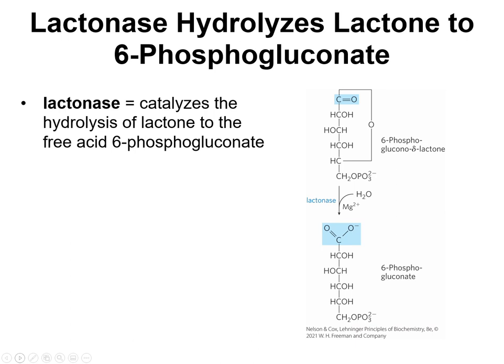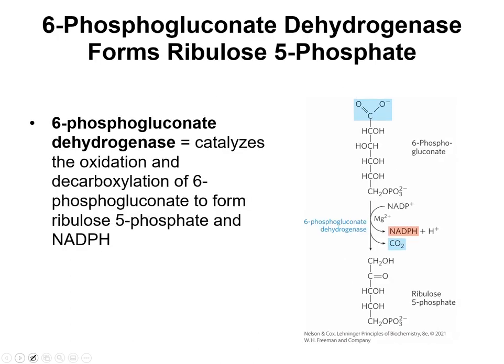Notice that we're still using magnesium for a lot of these enzymes. After you have the free acid, you have another dehydrogenase that catalyzes the oxidation and decarboxylation of 6-phosphogluconate to form ribulose 5-phosphate and another molecule of NADPH. Remember that glucose starts off as a 6-carbon sugar, and ribulose only has 5 carbons, so that decarboxylation cuts off one carbon so that we've got a 5-carbon sugar instead.